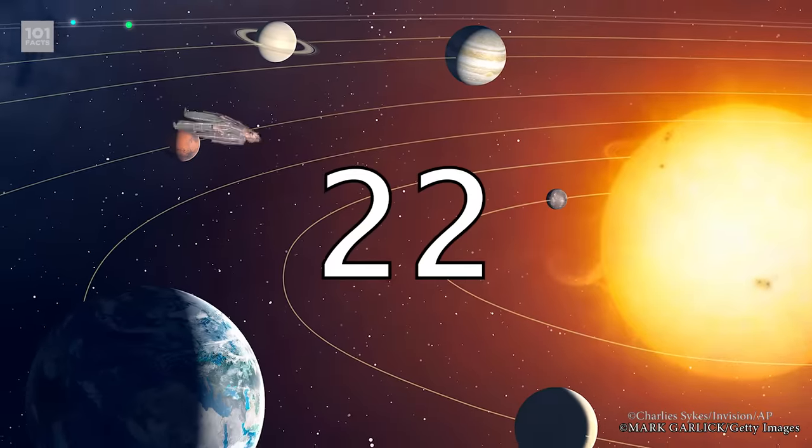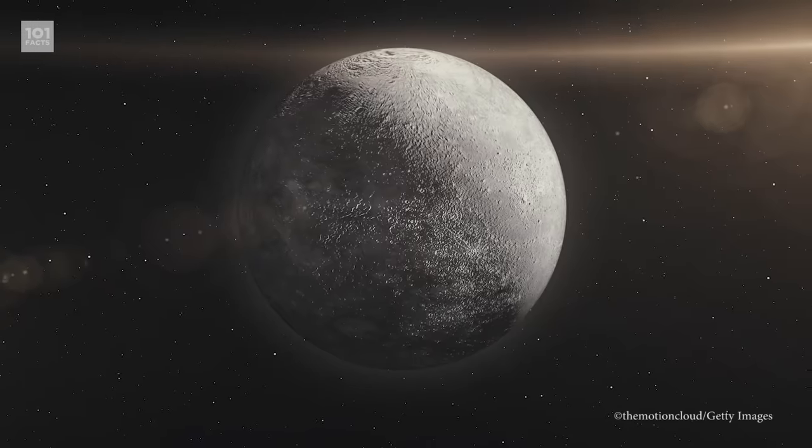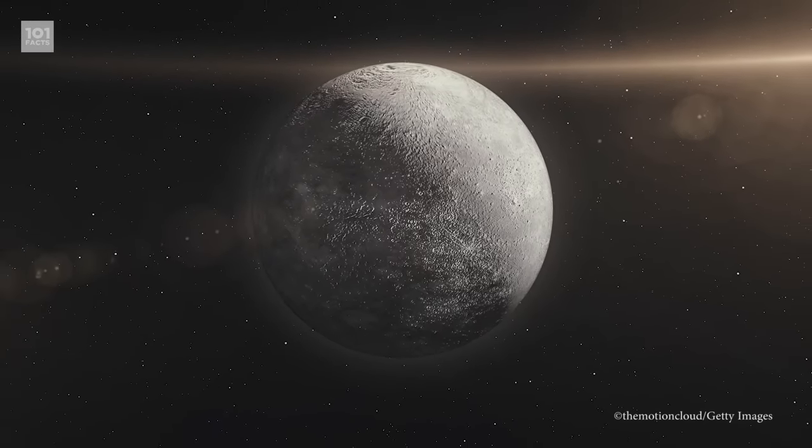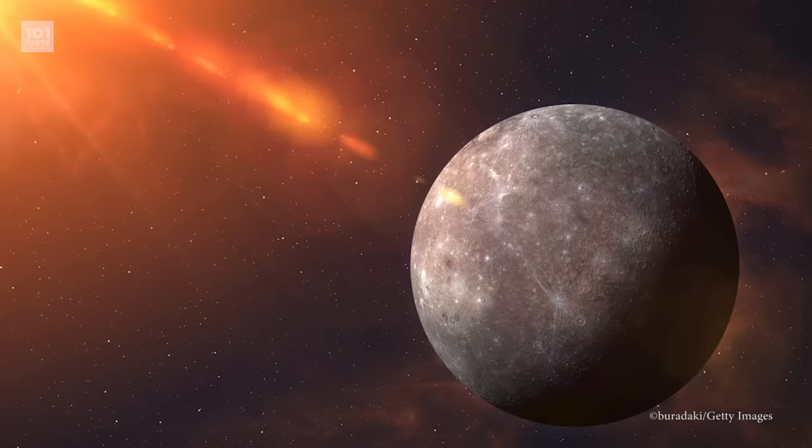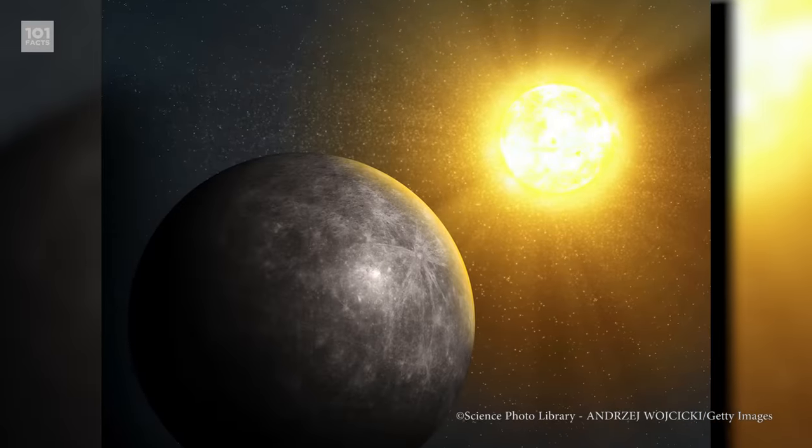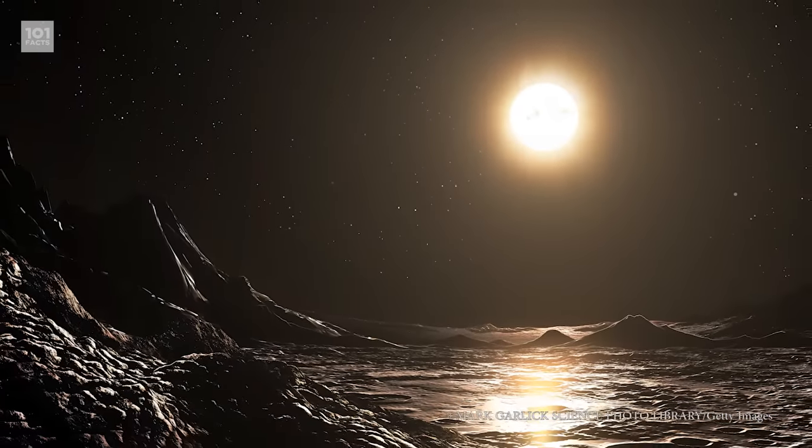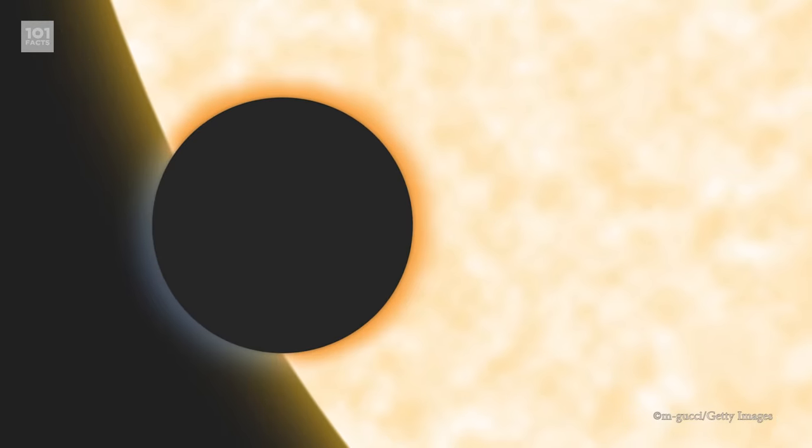Mercury also has the biggest fluctuations in temperature of any planet. Being the closest planet to the sun, it makes sense that it can reach 840 degrees Fahrenheit or 450 degrees Celsius. But because Mercury doesn't have a substantial enough atmosphere to trap heat, temperatures can plummet to minus 275 degrees Fahrenheit or minus 170 degrees Celsius.